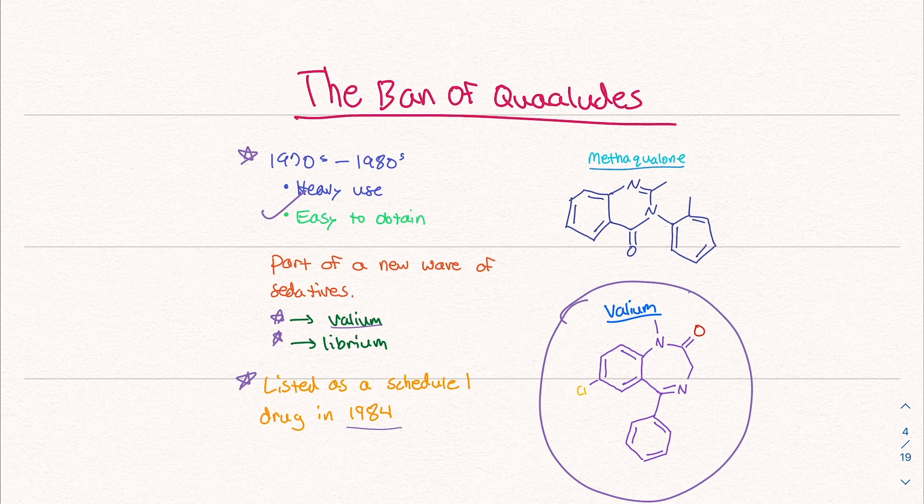And in 1984, it was listed as a schedule 1. Schedule 1 drugs are drugs that don't have any medical use: heroin, LSD, marijuana. Some of those I don't agree with, but it doesn't really matter. It's a drug you can't sell, you can't do anything with it. It's fully illegal. It was just causing way too many issues, and so it got banned.